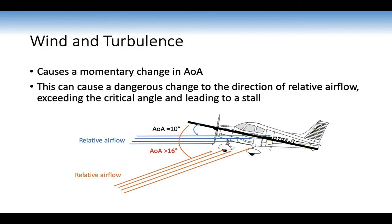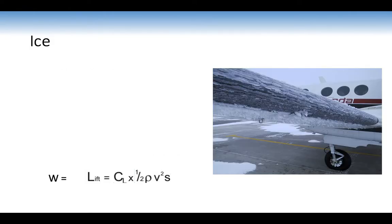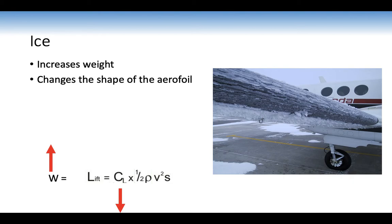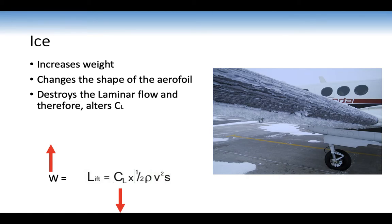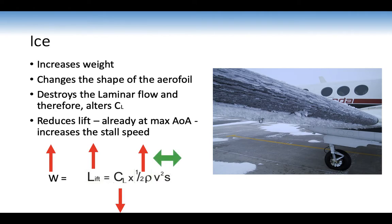You may encounter this during wind or turbulence, especially when flying at a high angle of attack already — the aeroplane may momentarily stall and you need to recover. Ice increases our weight and also changes the shape of the airflow, affecting our aeroplane's wings in two ways: it destroys the laminar flow, altering the coefficient of lift, and reduces lift already at maximum angle of attack, increasing the stall speed. As VFR pilots we fly in nice weather, but icing can occur on a cold winter's day when moisture freezes over the wing — so make sure you have a thorough pre-flight and melt any ice off.